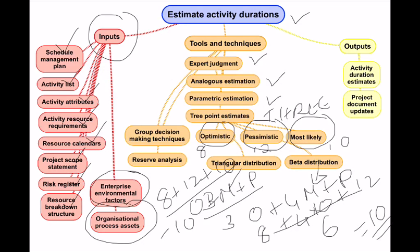When estimating activity durations, we sometimes employ group decision-making techniques like brainstorming or the Delphi technique. Delphi is always conducted by experts, and their inputs are incorporated into the estimation process.